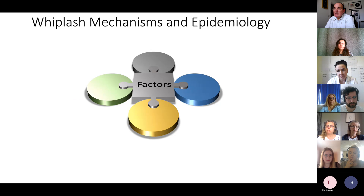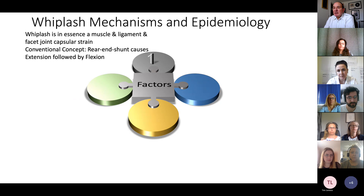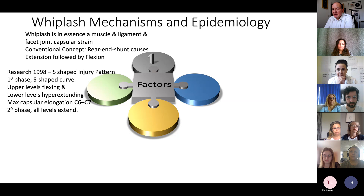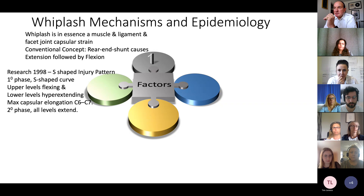Whiplash is essentially a muscle, ligament, and facet joint strain. The conventional concept is that it comes from a rear-end shunt, causing extension of the neck followed by flexion. But research in 1998 has shown a more complicated S-shaped injury pattern. In the first phase of the S-shape, the upper levels flex and the lower levels extend; then in the second phase, all levels extend. In that first phase, the C5-6 and C6-7 levels undergo quite a lot of capsular elongation and elongation of vessels and nerves within the spinal canal.